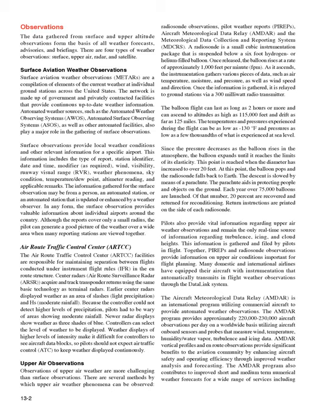Surface observations provide local weather conditions and other relevant information for a specific airport. This information includes the type of report, station identifier, date and time, modifier (as required), wind, visibility, runway visual range (RVR), weather phenomena, sky condition, temperature/dew point, altimeter reading, and applicable remarks. The information gathered for the surface observation may be from a person, an automated station, or an automated station that is updated or enhanced by a weather observer. In any form, the surface observation provides valuable information about individual airports around the country.